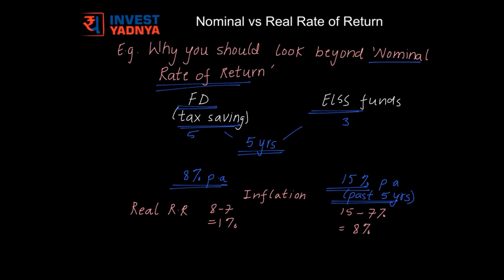If we assume inflation at 7%, the real rate of return in case of tax saving FDs would be 1%, whereas in case of ELSS funds it would work out to be 8%. So your money has grown by 1% in case of fixed deposits, and by 8% in case of ELSS funds. Putting your money into savings instruments versus investment instruments makes a huge difference.